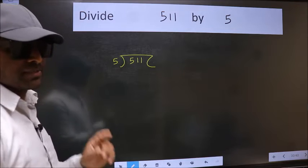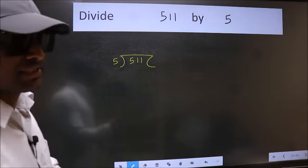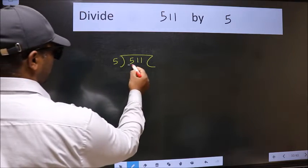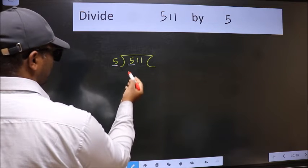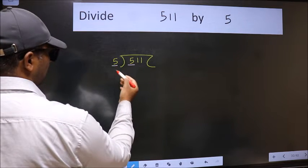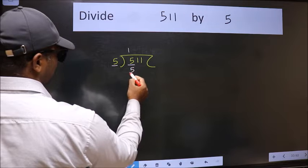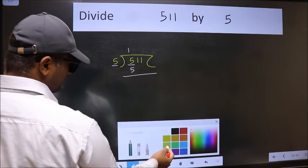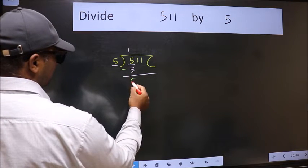This is step 1. Here we have 5, and here also 5. When do we get 5 in the 5 table? 5 once is 5. Now we should subtract. We get 0.